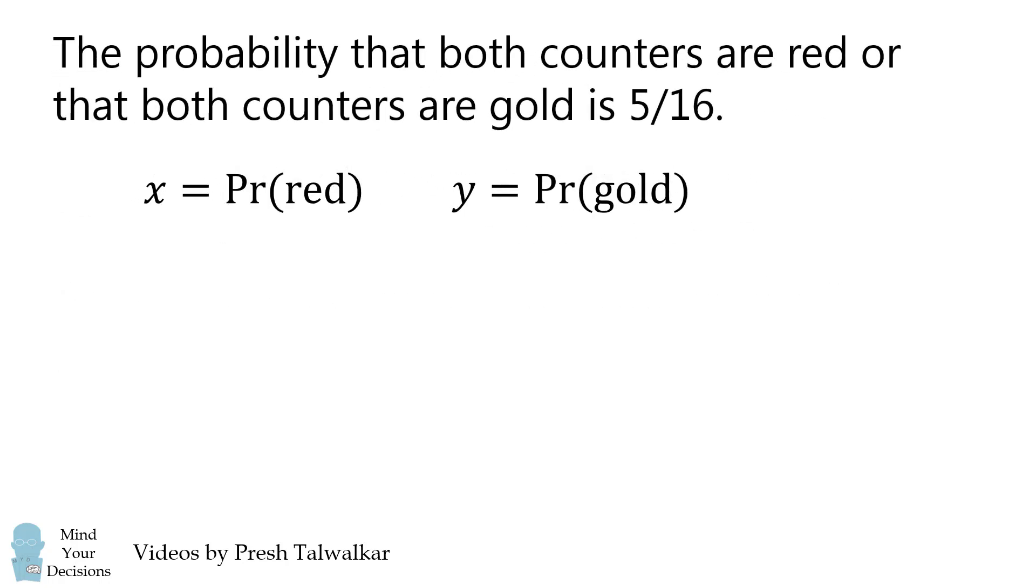Now let's focus on the next sentence. The probability that both counters are red or that both counters are gold is 5 over 16. What's the probability that both counters are red? We need a red counter on the first turn, and then we need a red counter on the second turn.